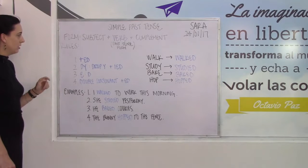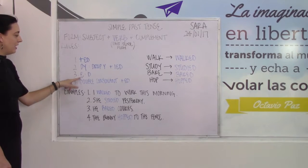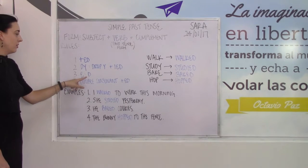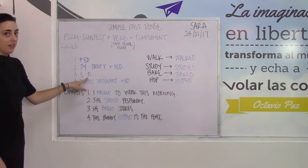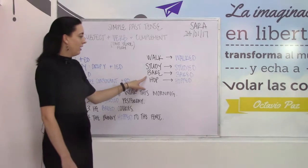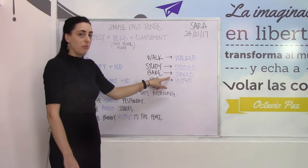Our third rule is for verbs ending in E. We are simply going to add a D at the end. So our verb bake gets turned into baked.